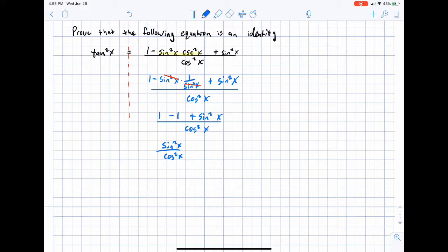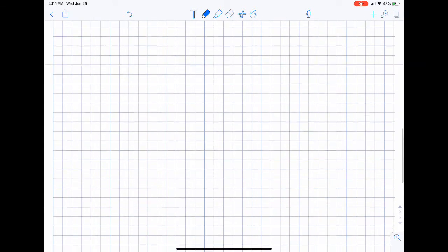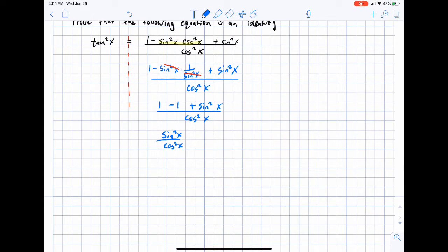And going back to our basic identities, I know that sine divided by cosine is tangent. And so we can write this as the tangent squared of x. And we have verified the identity.